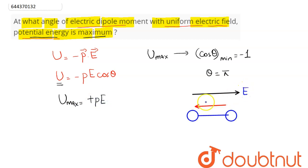This is our electric field, this is our electric dipole moment, this is minus q charge, this is plus q charge. When θ is 180 degrees, the potential energy of the electric dipole placed in uniform electric field is maximum.